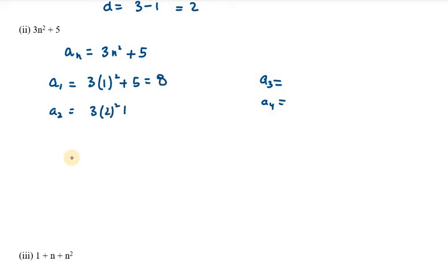a2 is 3 times 2 square plus 5. 3 times 4 is 12, 12 plus 5 is 17. a3 is 3 times 3 square plus 5. So 3 times 9 is 27, 27 plus 5 is 32. a4 will be 3 times 4 square plus 5. 4 square is 16, 16 times 3 is 48, 48 plus 5 is 53.